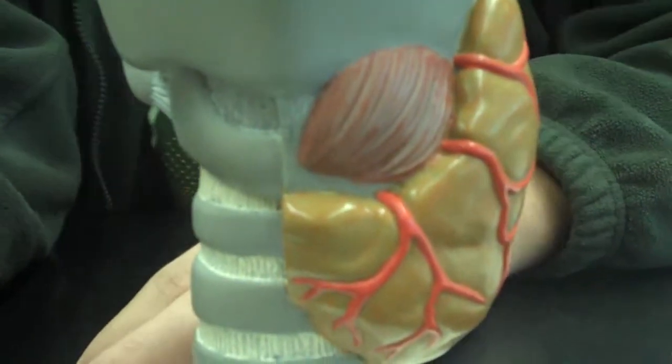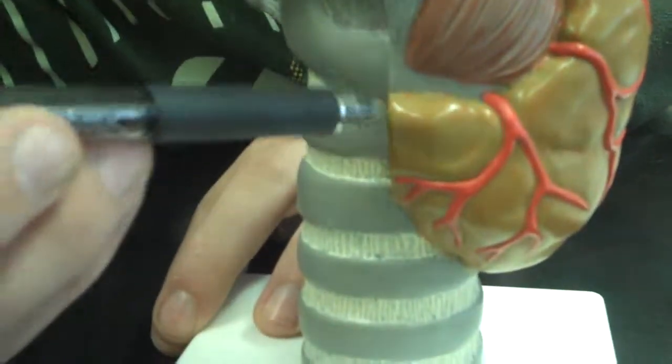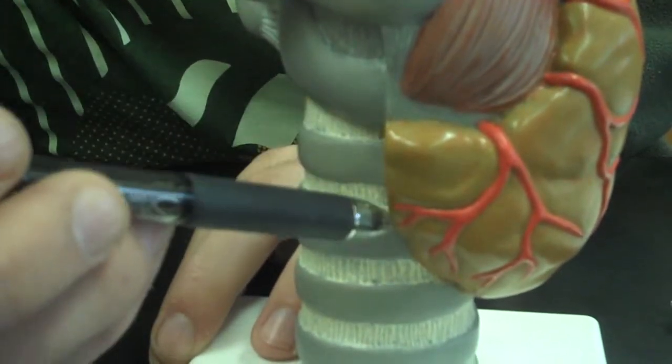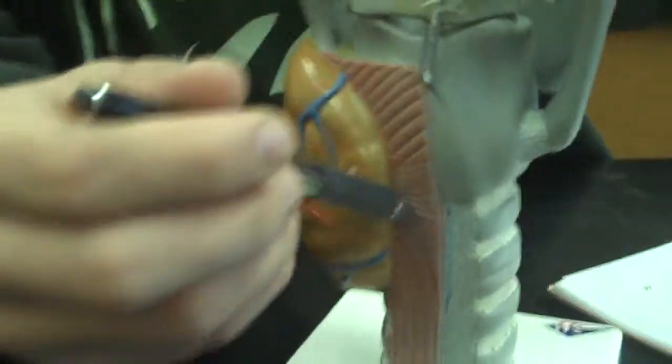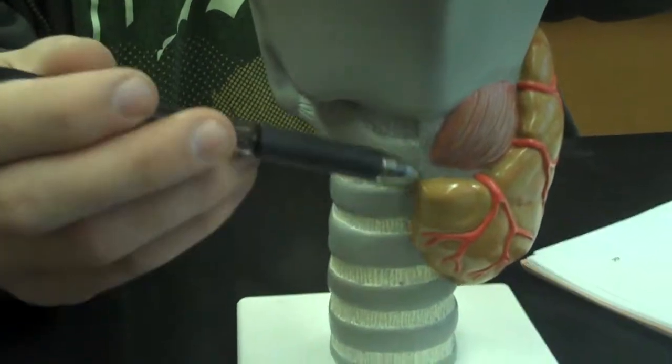And the second thing on the thyroid you have to know is the isthmus. And the isthmus is just the connection point between the two halves of the thyroid. As you can see on the back, the back of the thyroids don't connect. So only on the front do you have an isthmus.